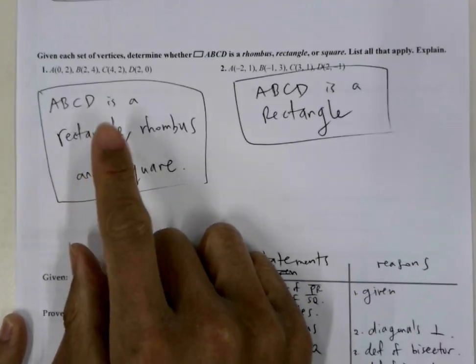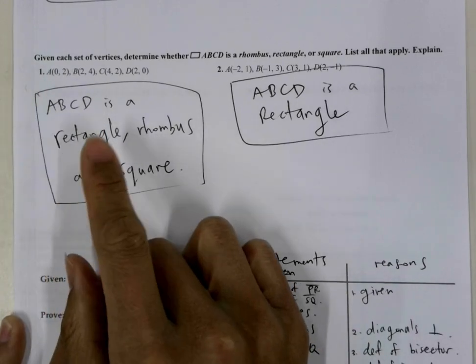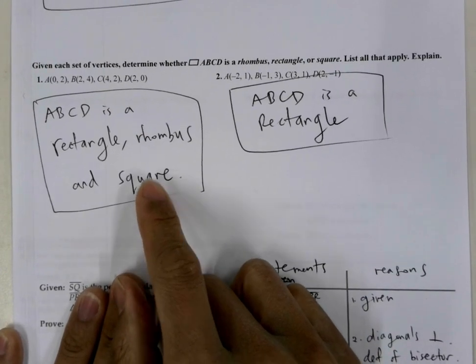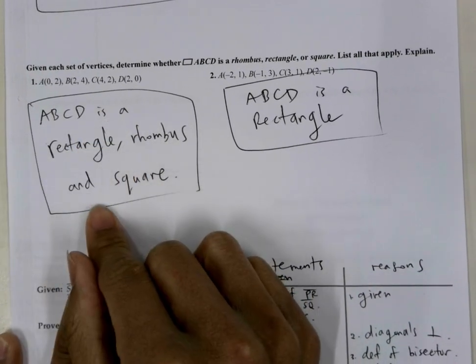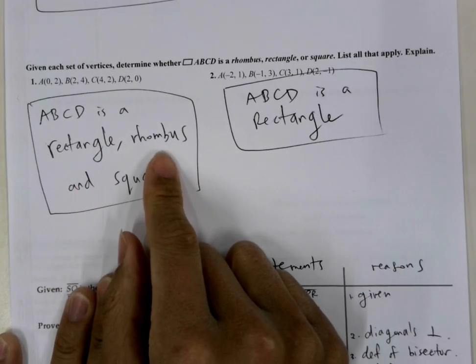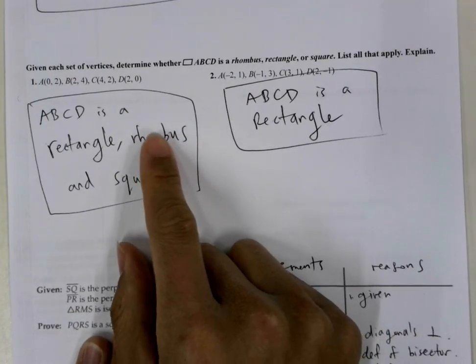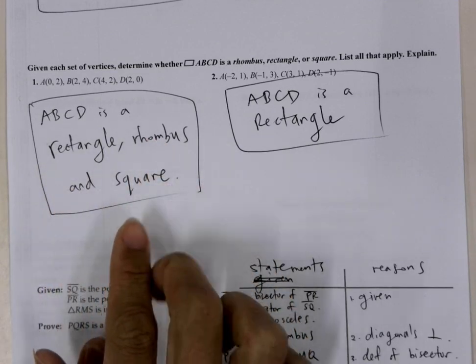All right, so for number one, ABCD parallelogram. ABCD is a rectangle and a rhombus, meaning that it is also a square. We showed that it was a rectangle by proving that the diagonals are congruent. We showed that it's a rhombus by proving that the consecutive sides are congruent, and then if it's a rhombus and a rectangle, then it's a square.